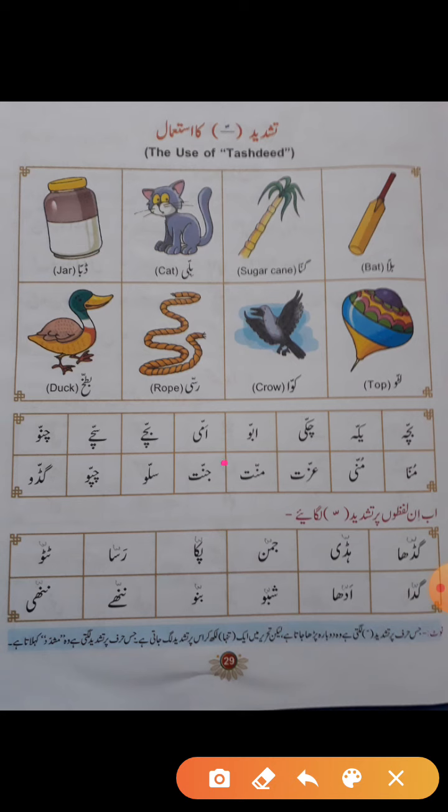چننو، منہ، منی، عزت، منت، جنت، سلو، چپو اور گڑو۔ اب یہاں پر ایکسرسائز میں آپ کو تشدید لگانی ہے۔ گڑھا میں دھیان رہے کہ ڈال پر ہی تشدید لگانی ہے — ادھر ادھر کریں گے تو مارکس نہیں ملیں گے۔ ہڈی، جم من میں میم پر بنے گی، پکا، رسہ، ٹٹو، گدھا، ادھا، شبو، بنو، ننھے اور ننھیں۔ یہ ایکسرسائز بھی ہوم ورک میں کرنی ہے۔